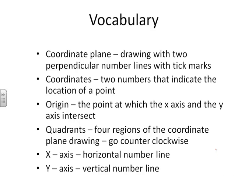Our vocabulary is as follows. Coordinate plane is the drawing with two perpendicular number lines with tick marks on them. I think every one of you have seen this before. The coordinates themselves are two numbers that indicate the location of a point. Origin is the point at which the x-axis and the y-axis intersect.